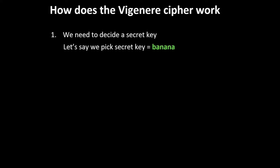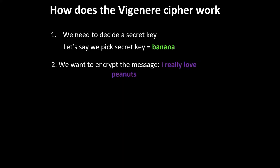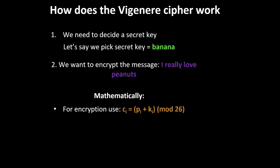How does the Vigenère cipher work? First, we need to choose a secret key. Let's say we pick the secret key "banana" because we like bananas. Then we need a message that we want to encrypt — let's say the message is "I really love peanuts."